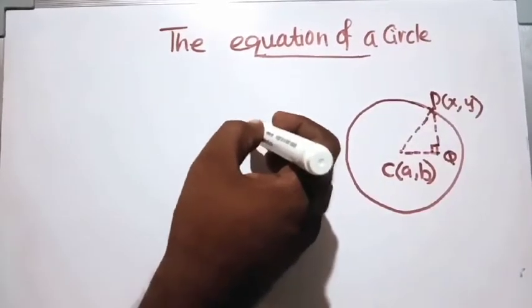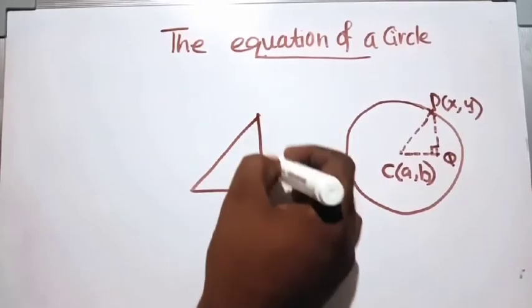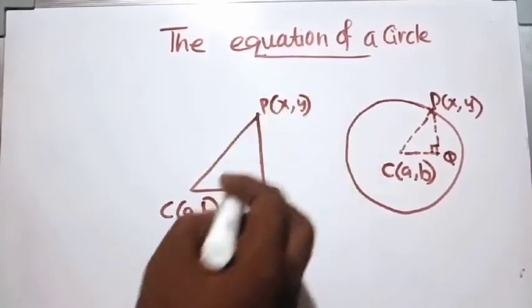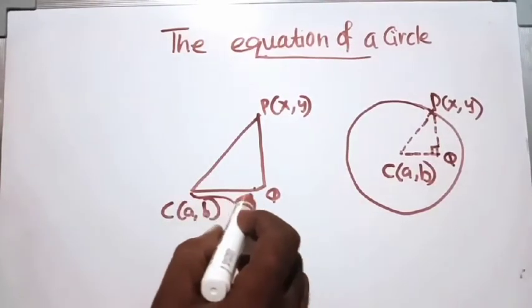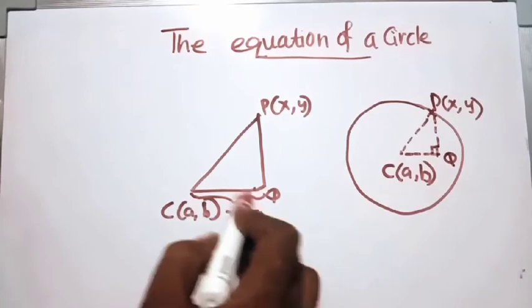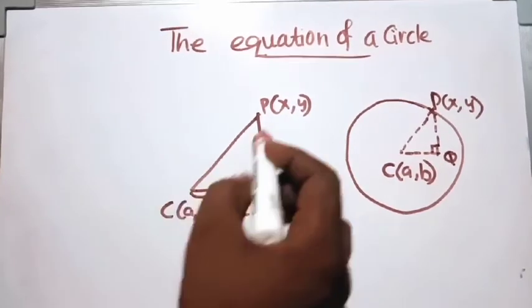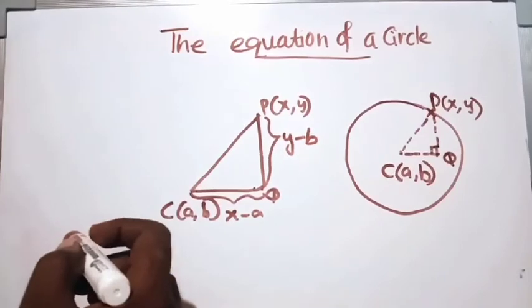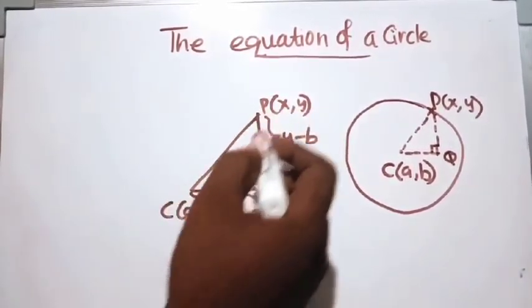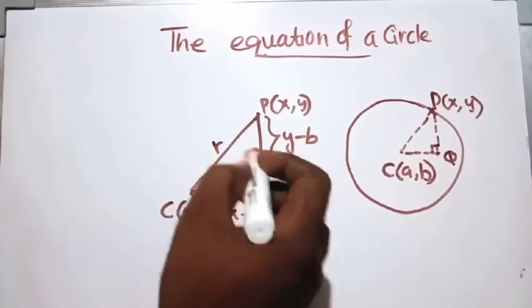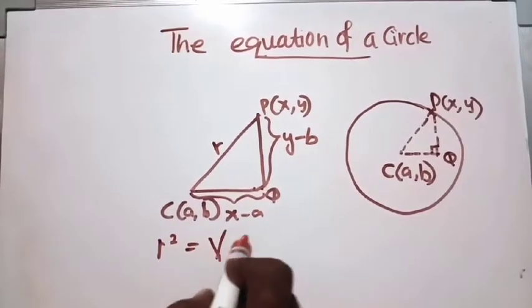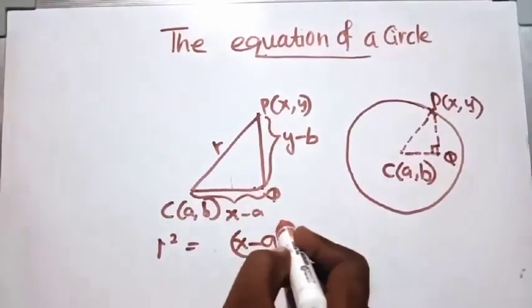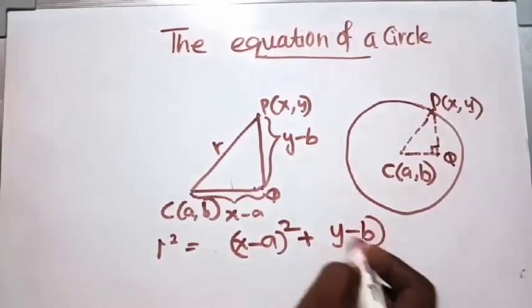Let's take the right triangle CQP, where P is (x, y). The horizontal distance is x minus a, and the vertical distance is y minus b. So the radius of this circle can be found using the Pythagorean theorem: r squared equals (x minus a) squared plus (y minus b) squared.